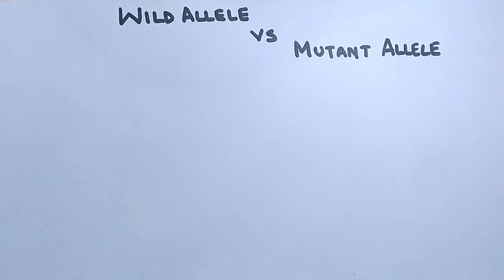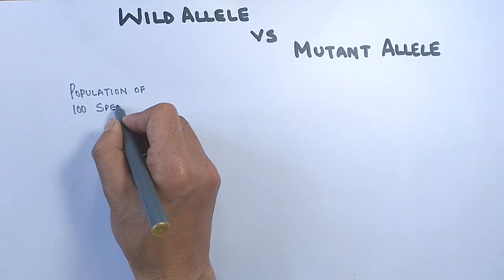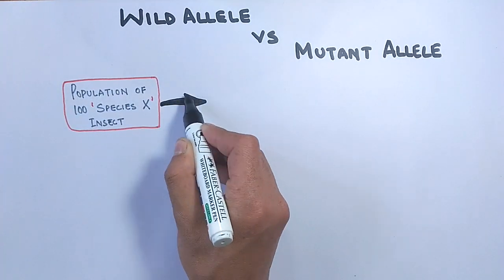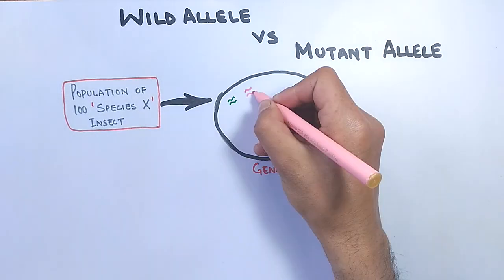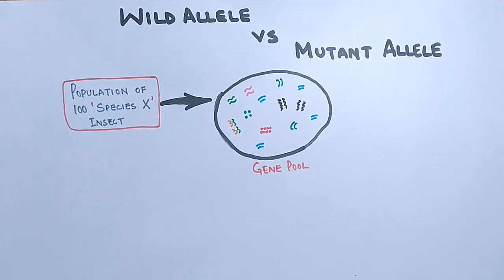Let's get to our topic. First of all, let's consider a population of 100 insects — we call them species X. When we look at the gene pool of this population, we see it has got a diversity of genes present, and these genes have different functions within the population.